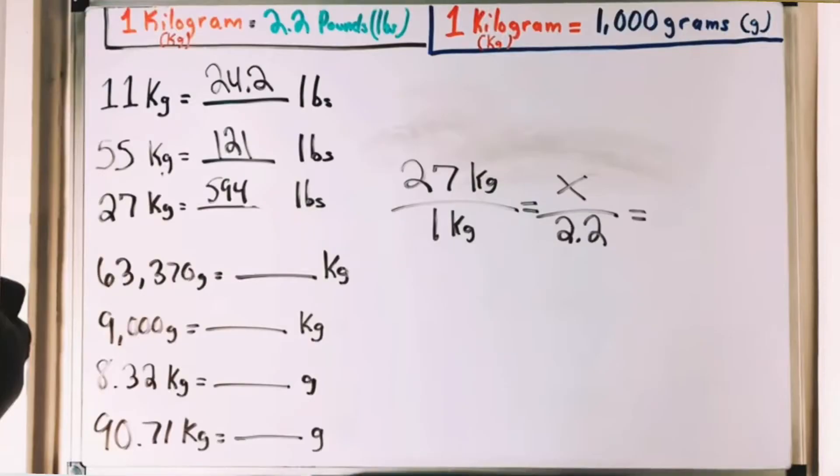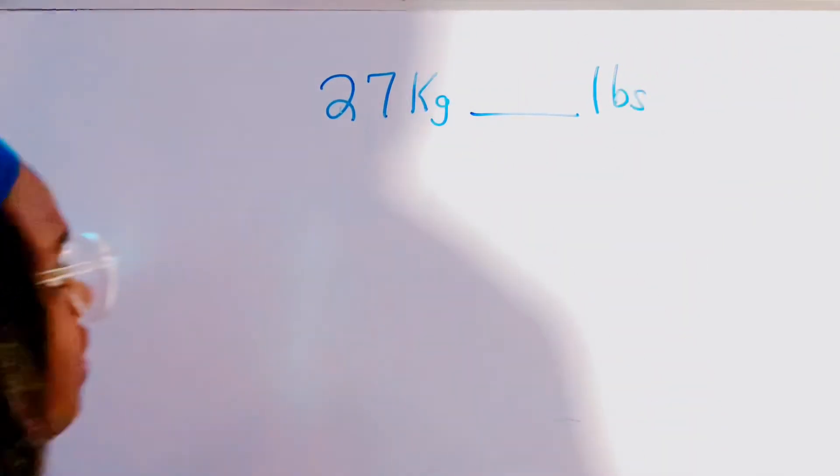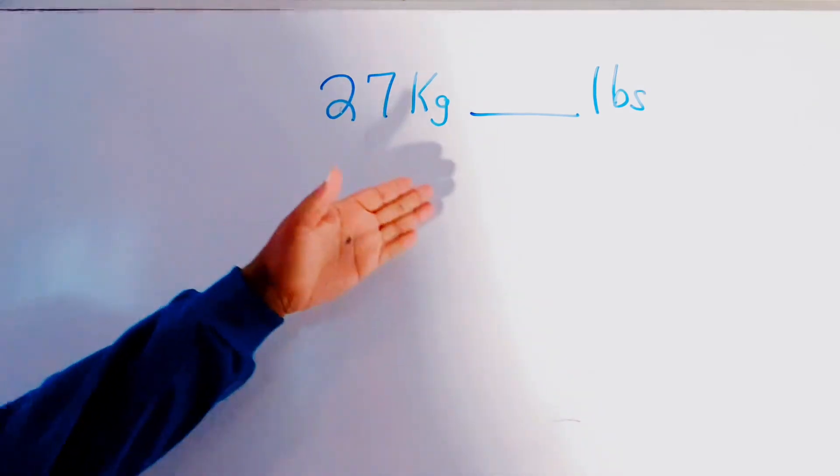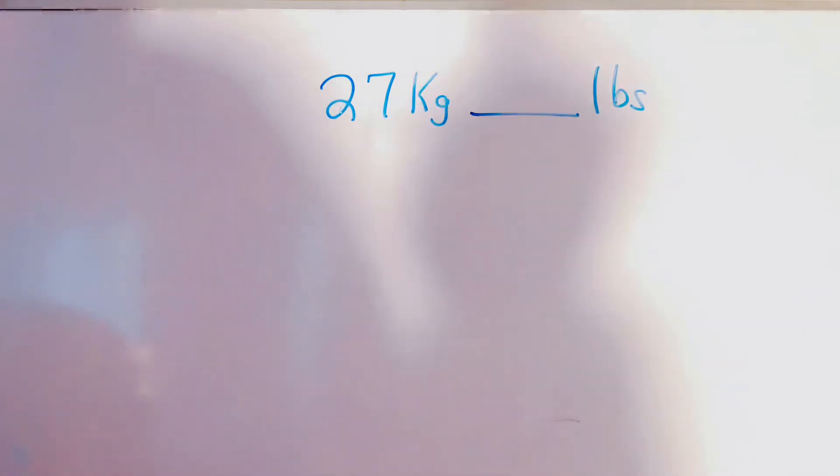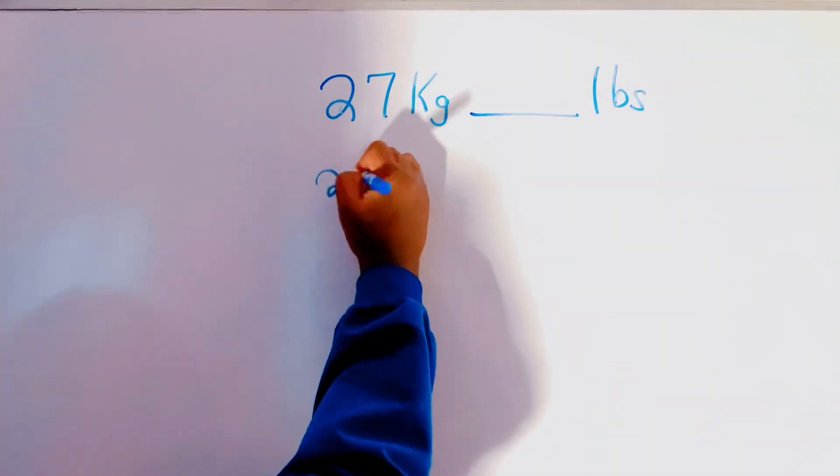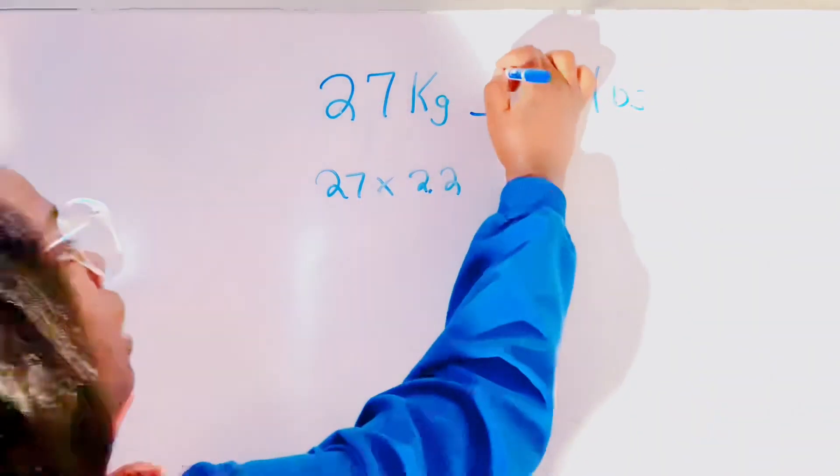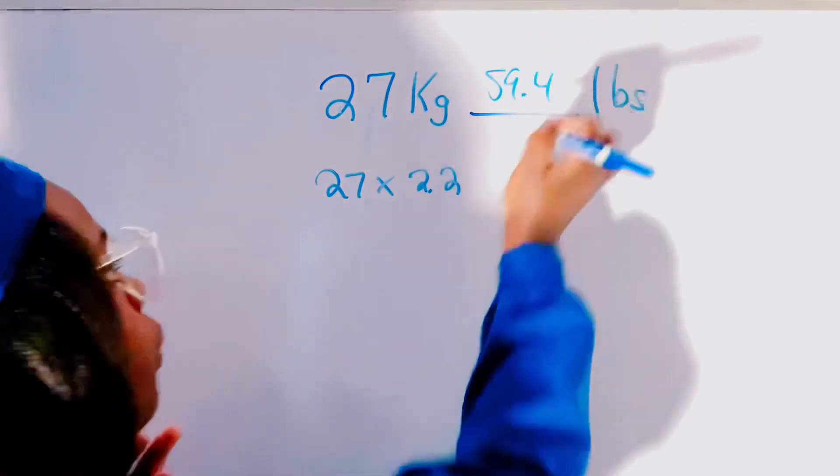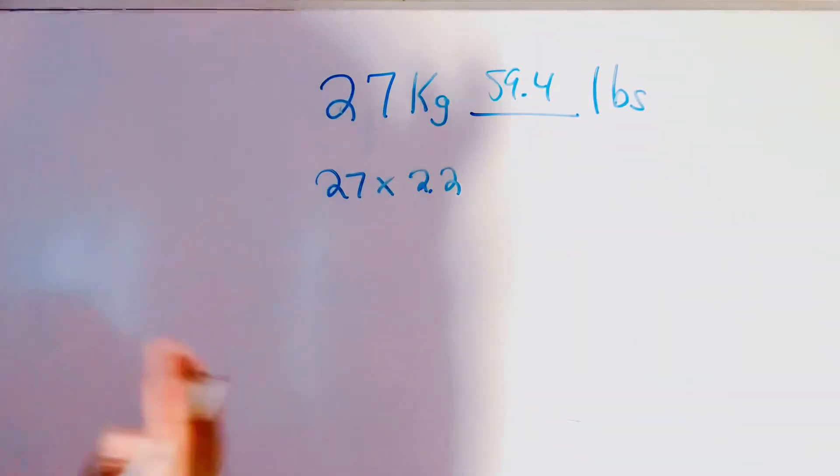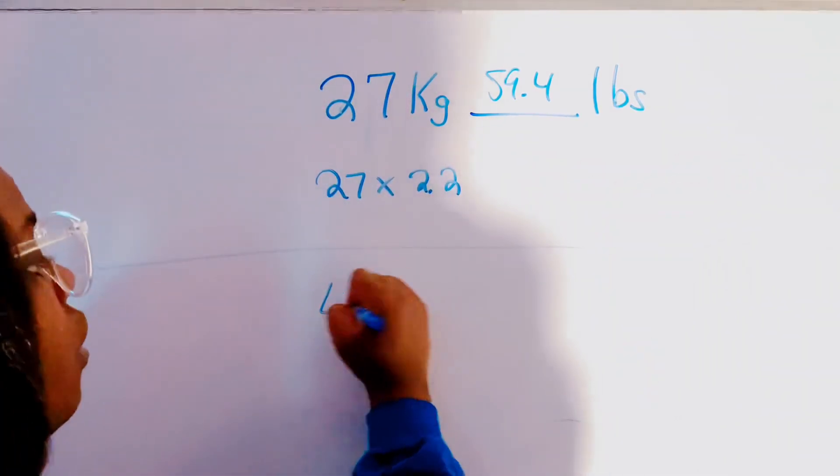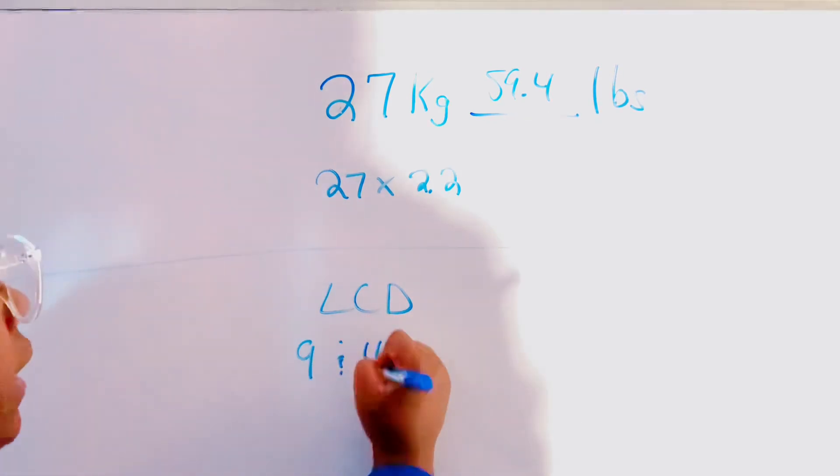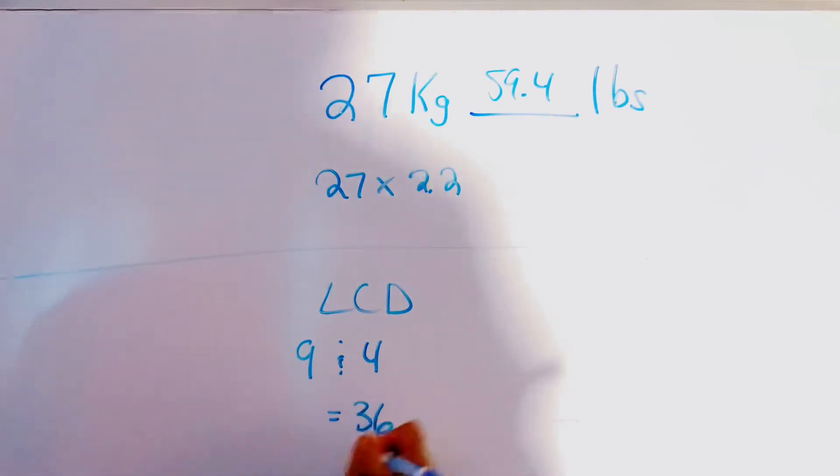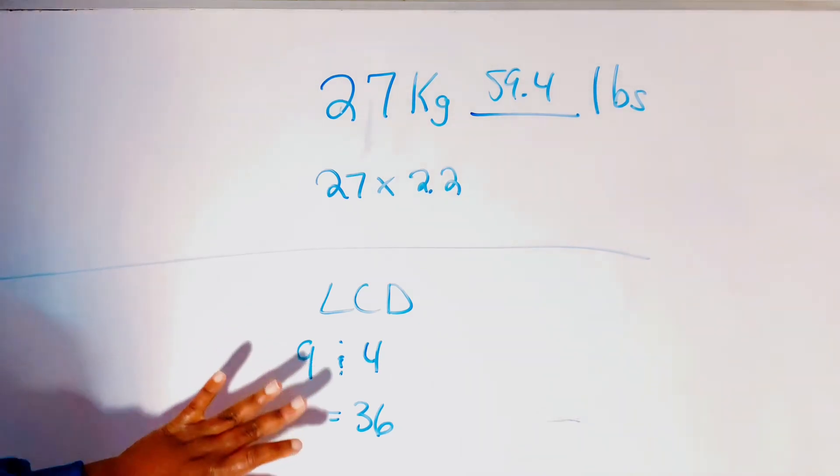Another error that was made in the video was that I did not write the correct answer for converting kilograms to pounds. And for us to do that, all we have to do is multiply by 2.2. So, 27 times 2.2 is going to give us 59.4 pounds.